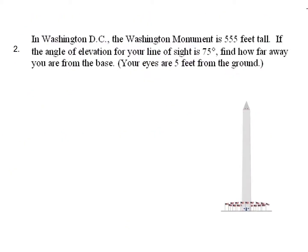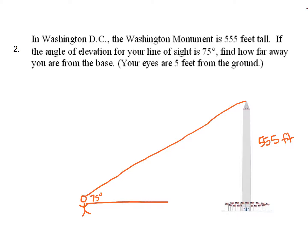Example two: in Washington DC, the Washington Monument is 555 feet tall. I'll label that 555 feet. If the angle of elevation from your line of sight is 75 degrees, I'll draw the person and the angle of elevation to the top — 75 degrees. We want to find how far away we are from the base of the Washington Monument, so that distance is my x. Now, this is important: the person might be five feet tall, so your eyes are five feet off the ground. I'm going to subtract five feet, so instead of 555 feet we're using 550 feet.